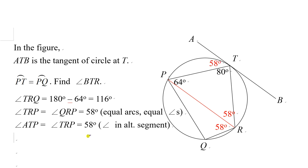And finally, you can use adjacent angles on a straight line to find angle BTR equals 180 degrees minus 80 degrees minus 58 degrees. That is 42 degrees.